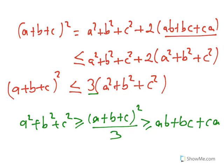We already knew this inequality: a squared plus b squared plus c squared is greater than or equal to ab plus bc plus ca. Now we get a breaking point between them — a plus b plus c perfect square over three is something in between. Equality holds if and only if all of the terms, that is a, b, c, are all equal to each other.